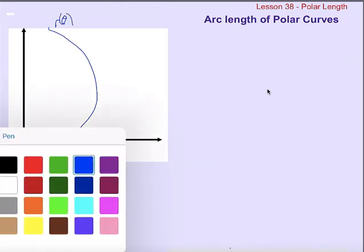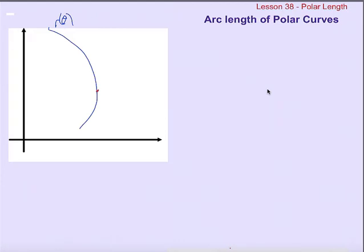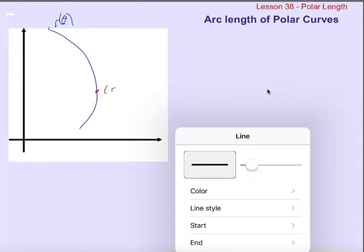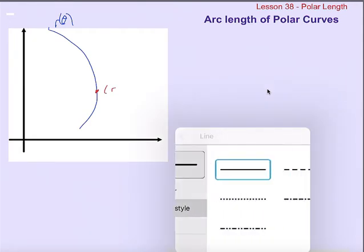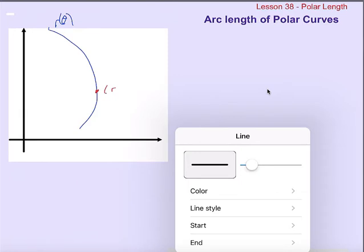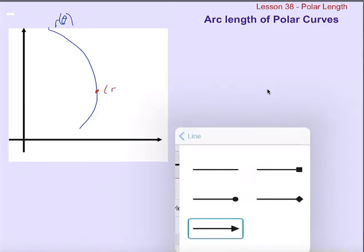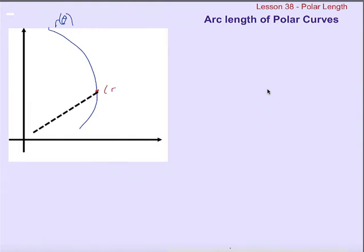Every point on this curve is defined by the radius at that point—the distance from that point to the pole, which we call r—and the angle rotated from the positive x-axis, which we call θ. So this point (r,θ) is defined by those two pieces.